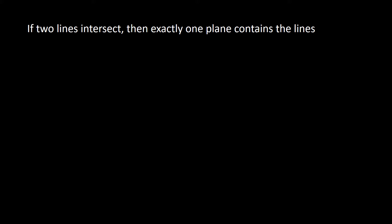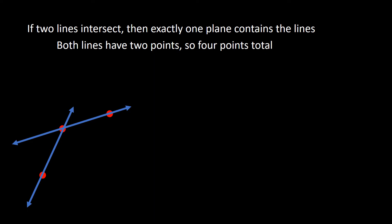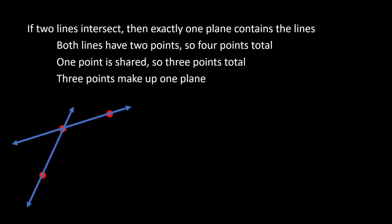Using the same type of logic for this next theorem: if two lines intersect, then exactly one plane contains the lines. We have two lines that intersect. We need two points on each line, so there are four points total, but notice there is one point that is shared where they intersect. So there are only three points total technically. A plane requires three points to know which way it's going, so three points make up one plane — therefore if two lines intersect, exactly one plane contains the lines.